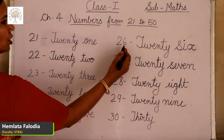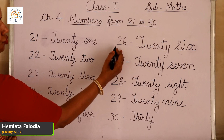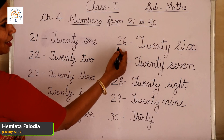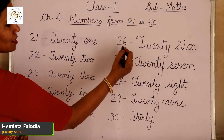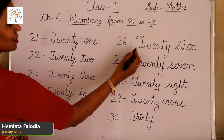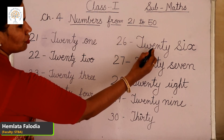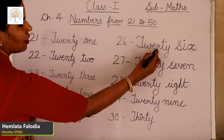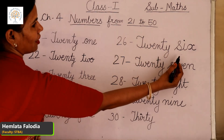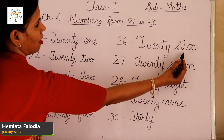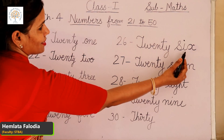Come to the next, 26. 20 plus 6, this is the expanded form. 20 plus 6 means 26. And the number name: T-W-E-N-T-Y, 20, S-I-X, 6. This is 26.